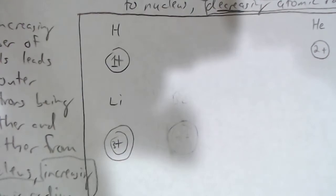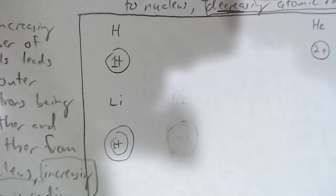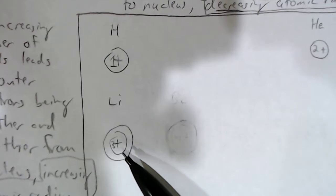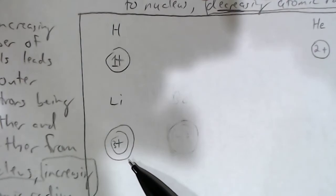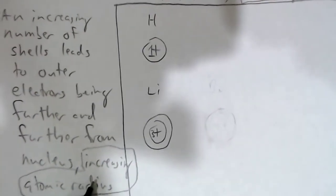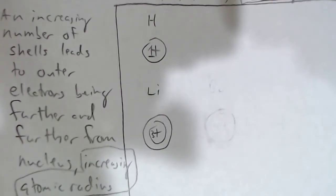So first, as we go down the periodic table, there happen to be more and more shells — principal energy levels — that hold electrons. Each shell occupies some space, so if there are more shells, those shells have to get further and further from the nucleus. So the outer electrons will be further from the nucleus, and atomic radius will increase due to increasing numbers of shells.